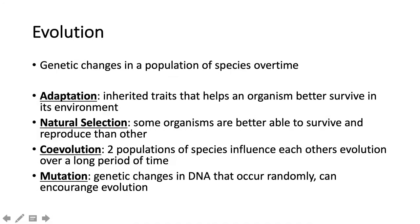Co-evolution is when two populations of species drive each other's evolution. For example, the poisonous newt and the poison-resistant snake we looked at in class, where they're actually driving each other's evolution — referred to as an evolutionary arms race. As the newt got stronger in its toxin, the snake became more resistant, and over time they just kept pushing each other's evolution along.